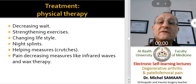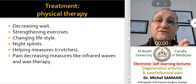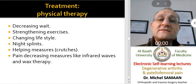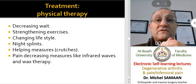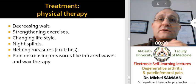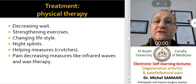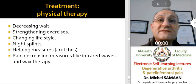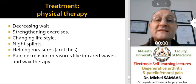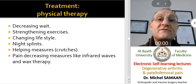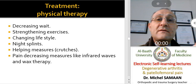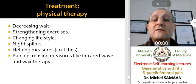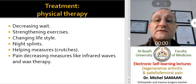The treatment of degenerative osteoarthritis includes conservative and surgical options. In conservative physical therapy, we can use weight reduction, strengthening exercises, lifestyle changes with avoidance of increased stress on the joint, night splints to decrease night pain, crutches to decrease weight on the joint, and modalities such as infrared and wax therapy.